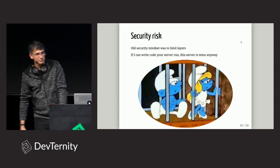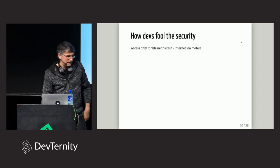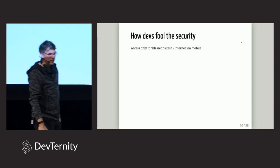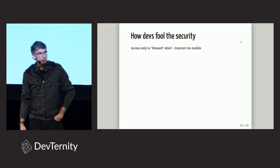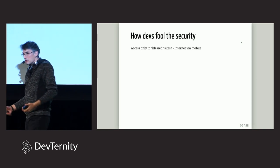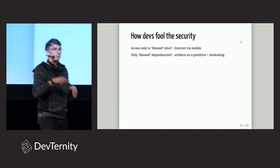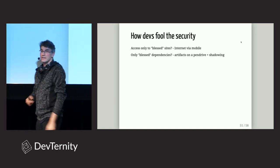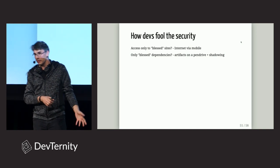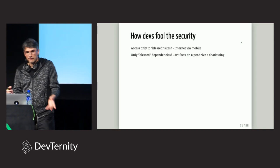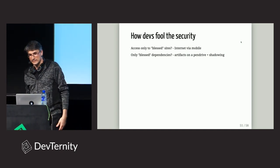I know a bank where IT people have no internet access — and it's 2019. So what they do: they buy a cell phone, set up mobile internet, and work around it. I know a company that can only use blessed dependencies on their classpath. What do developers do? They download the dependencies, unpack them, and repack them into their own code — shadowing. They just need pen drives. And the biggest offender I know — a friend's story at a bank — was that you couldn't use any library not on the whitelist, and that whitelist was updated only once a year.